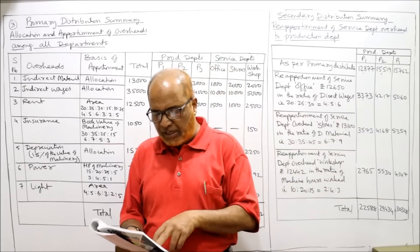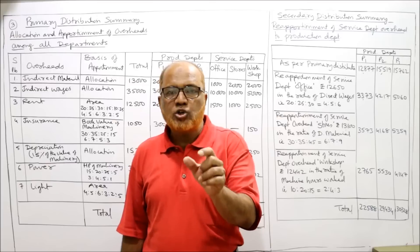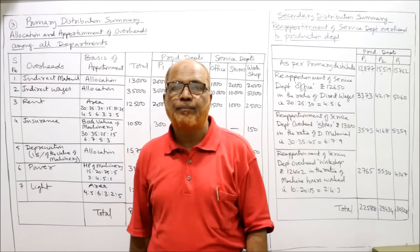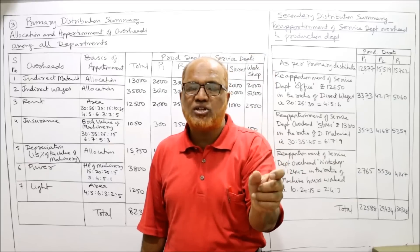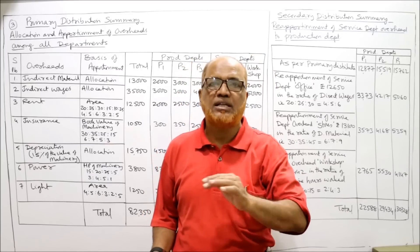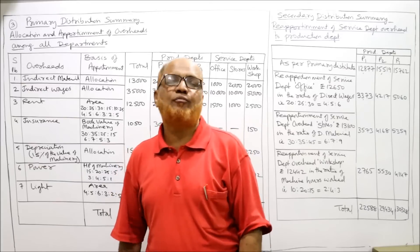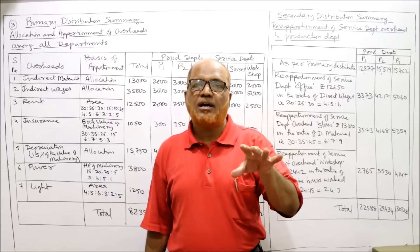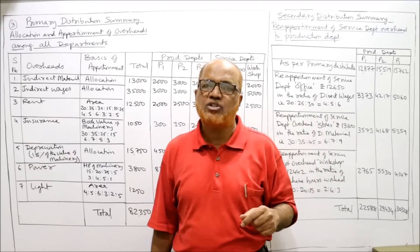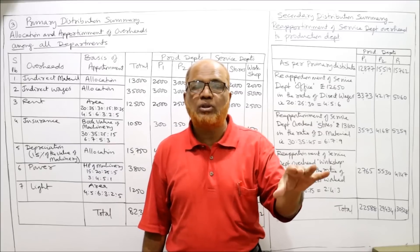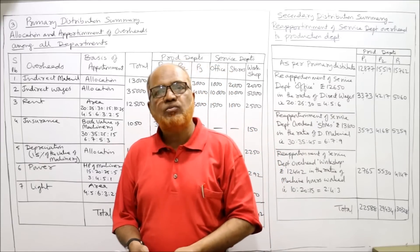Depreciation is 15% of the value of machinery — this is allocation since it is calculated directly per department rather than apportioned. Power 3,800: in the previous problem power was distributed on the basis of value of machinery, but the more appropriate basis is HP of machine. If HP is not given we use value of machinery, but since HP is given here, we distribute power on the basis of HP of machinery.